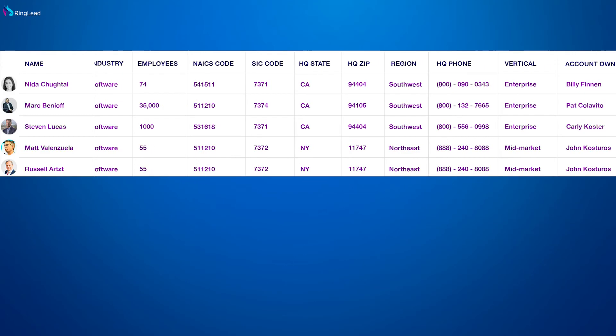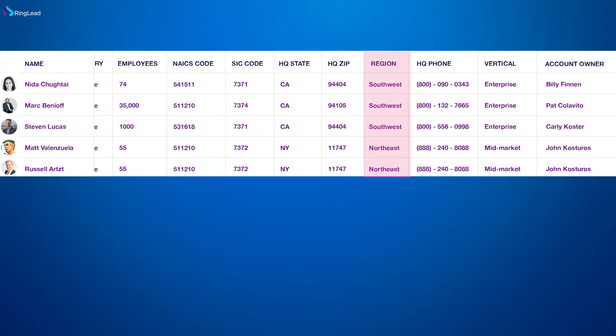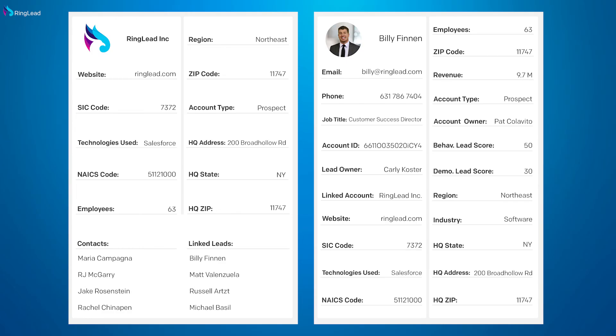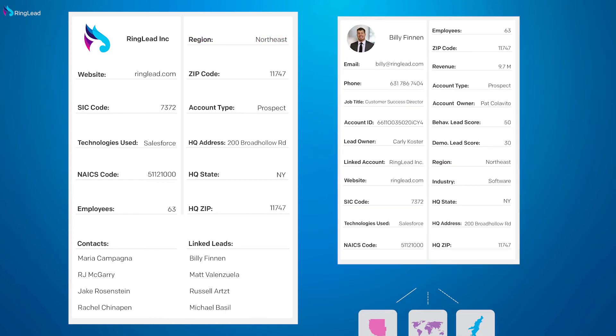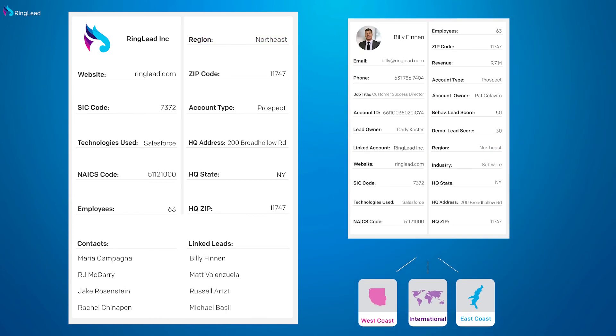Our routing is based on overall accounts, and within these accounts we have different rep territories — so there's another layer beyond that. Most importantly, we need to have an understanding of the account in order to fire the different routing rules that we have in our organization.